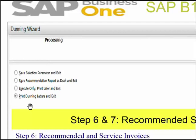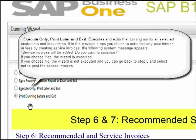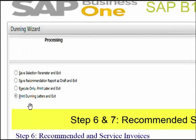The third option — execute only, print later and exit — executes and exits the Dunning wizard for all selected customers and documents. If in the previous steps you chose to automatically post interest or fees by creating service invoices, a system message appears: 'Service invoices will be added. Do you want to continue?' If you choose Yes the wizard executes; if No, you can go back to step six and select not to post the service invoices.